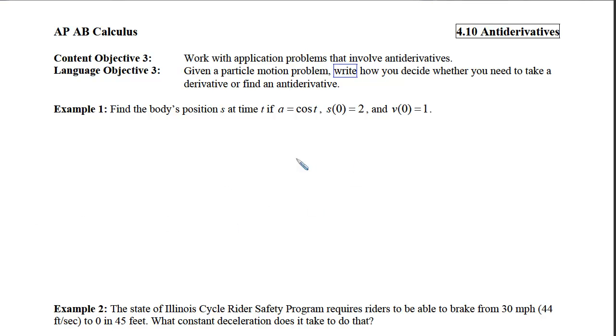So the first thing we have to realize is that the acceleration is what we have, and we want the position. We know that acceleration is the derivative of velocity, whereas the velocity is the derivative of the position. So in order to get the position, we are going to have to go backwards two times.